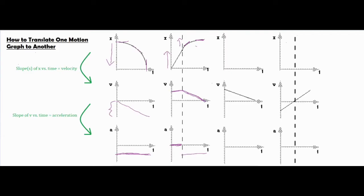Going to the third problem — now we are starting with a velocity versus time graph. All of these velocities are positive because they are above the x-axis, and because the line is moving towards zero, I know that it's slowing down. When I go up to my position versus time graph, I know I'm going to be moving in the positive direction the entire time because all of these values are positive. But I want the slope to get flatter and flatter as it progresses to show it's slowing down. So I rise up in the positive direction and make it get flatter and flatter. Then sliding down to the acceleration versus time graph, it is a constant negative slope, so we have a constant negative acceleration.